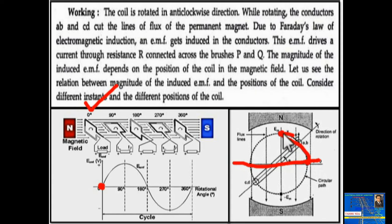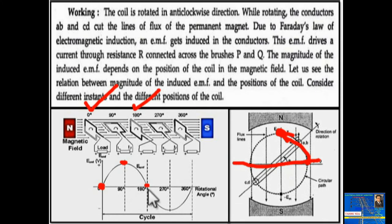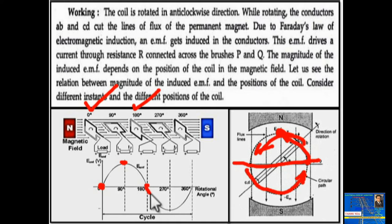As the coil starts moving and reaches 90 degrees, the induced EMF is maximum. At 180 degrees — the third case — the induced EMF is again zero. After 180 degrees, the direction of the coil's movement reverses: earlier it traveled from right to left, but now it moves from left to right. Therefore, the direction of induced EMF reverses and the direction of current also reverses.